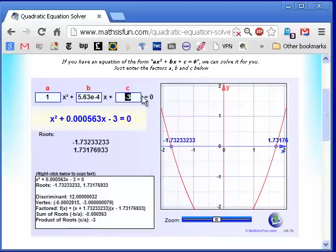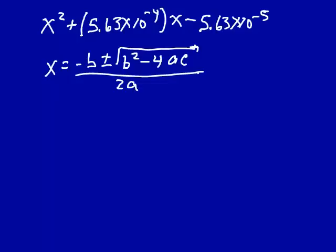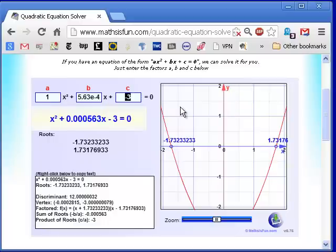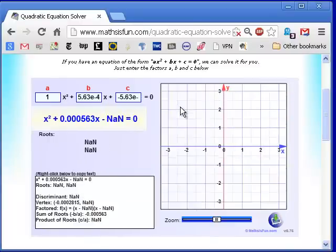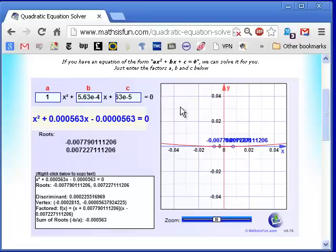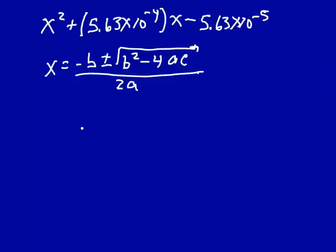And let's look at c. c is minus 5.63 times 10 to the minus 5th. Don't forget the minus sign. And let's actually before we do that, we want to check. Let's actually put this into our calculators. Make sure that the thing we find online is correct.